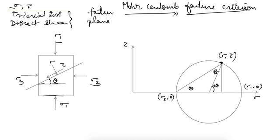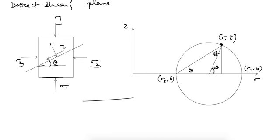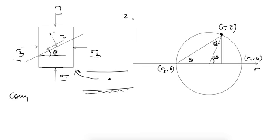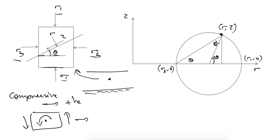Before going further, let's see principal stresses briefly. Consider a soil mass where the stress condition at a point is represented: sigma 1 is the major principal stress and sigma 3 is the minor principal stress. In soil, compressive stresses are considered positive. In a stress element, shear stress producing an anti-clockwise couple at the center is considered positive — this is opposite to the convention in strength of materials.